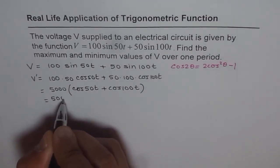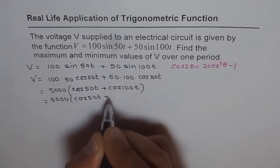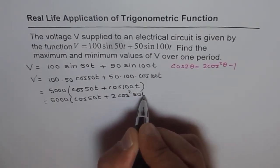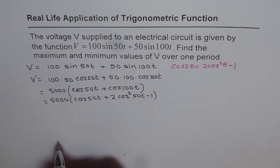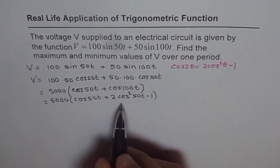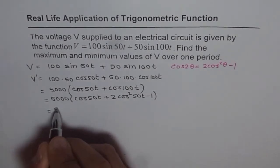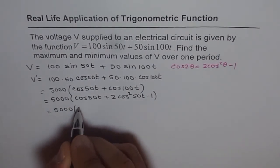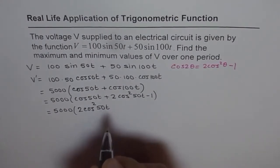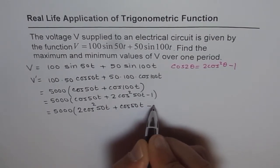So we get 5000 times [cos(50T) plus 2cos²(50T) minus 1]. This is a quadratic equation in cos(50T). Rearranging it gives us 2cos²(50T) plus cos(50T) minus 1 equals zero.